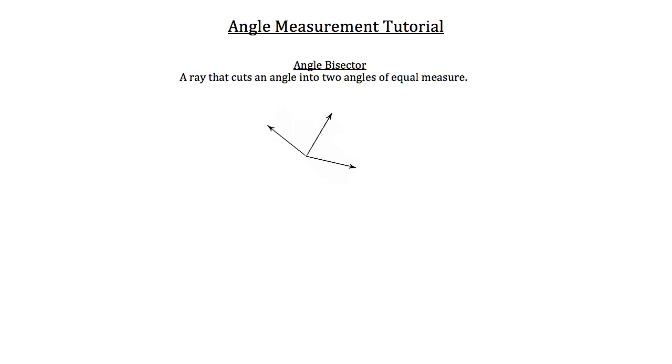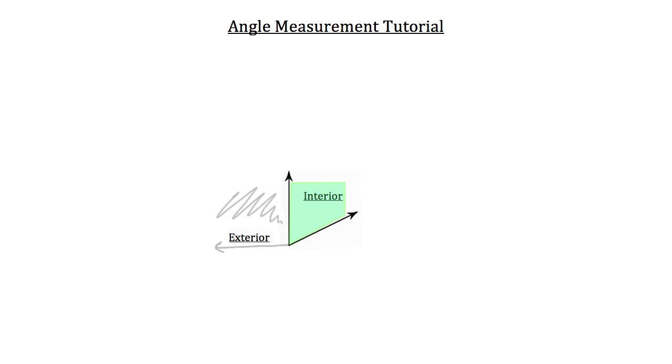Now the last thing that I want to leave you with in terms of angles and angle measurement is to discuss the interior and exterior of an angle. On any angle the interior is the space in between the two rays that form that angle. So on this angle that's roughly the green shaded region right here. And the exterior is the outside of that angle. So in this case if there were another line running this way we would say that this would be the exterior, this gray shaded region.